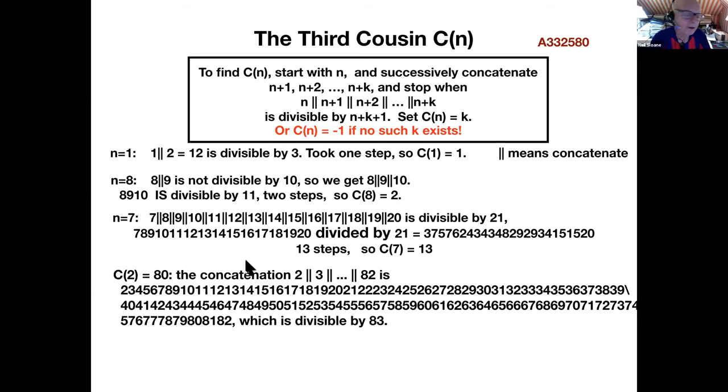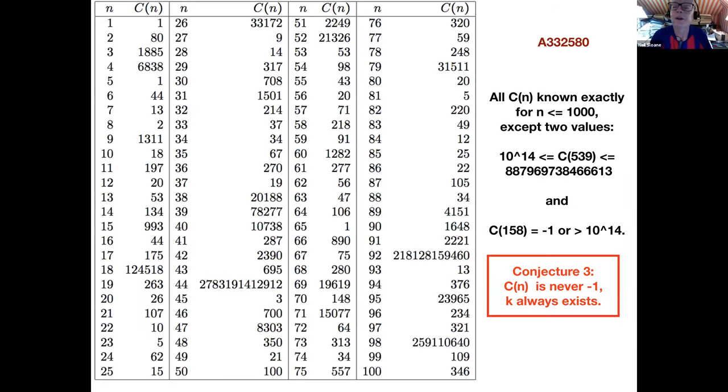If we start with 2, it's even more difficult. We have to glue together 2, 3, 4, 5, all the way up to 82. We have to go forward 80 steps before we get a division. So C of 2 is 80. In fact, we're not even certain that this process always stops. So we define C(n) to be minus 1, if this division concatenation and division process continues forever.